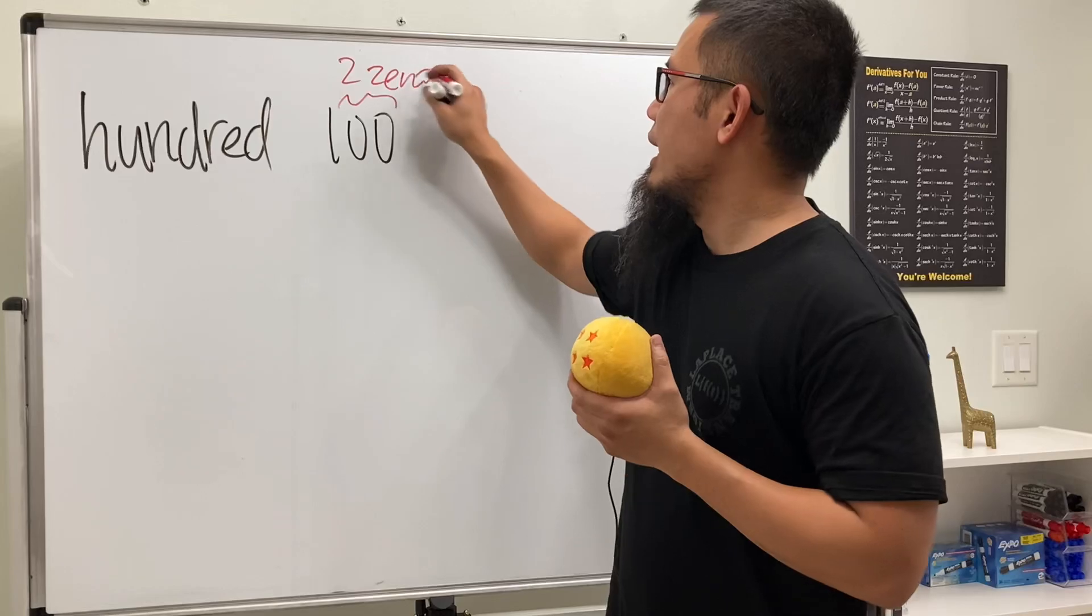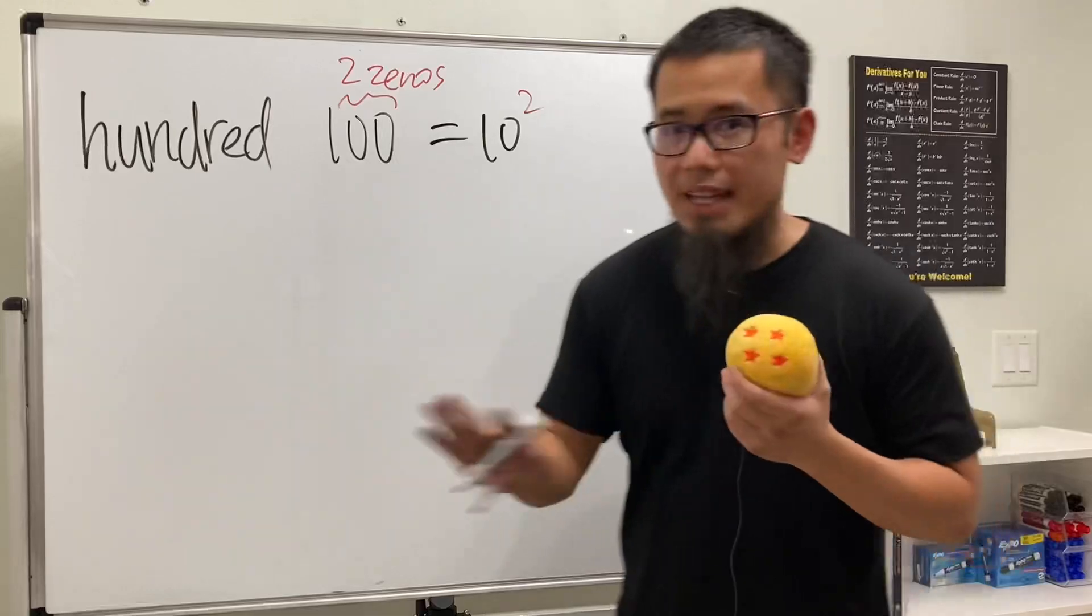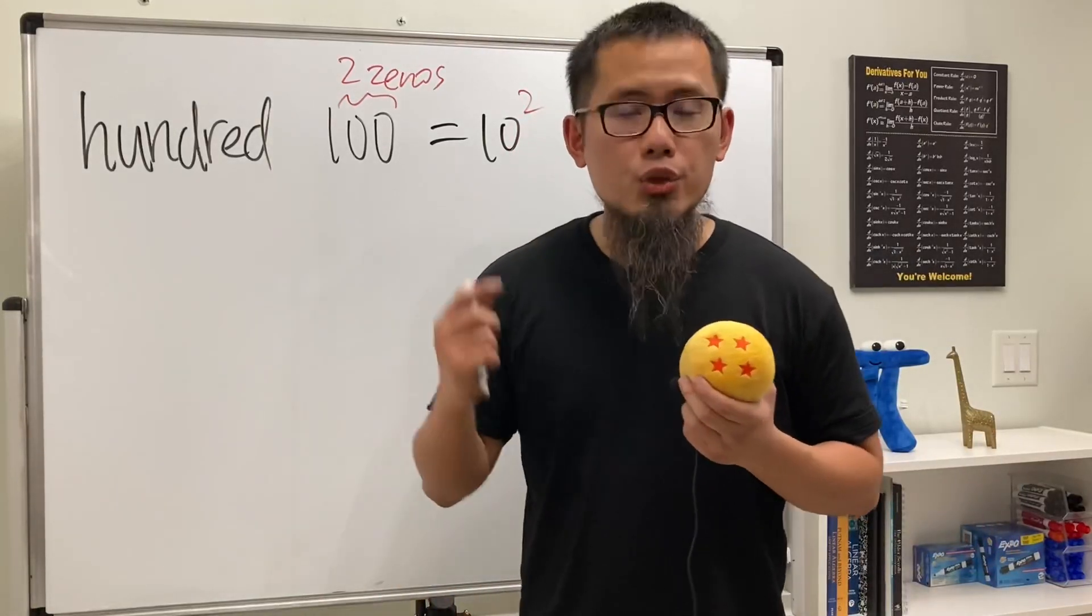Right, and here we can clearly see we have two zeros. We can of course be fancy a little bit and say this right here is the same as 10 with a two right here. Done.